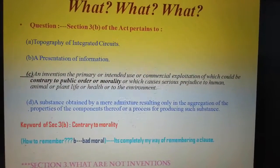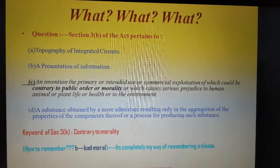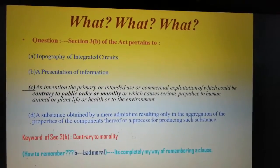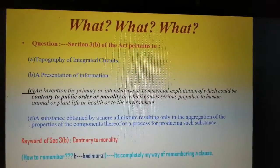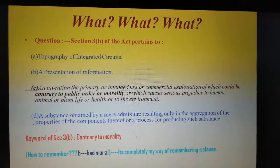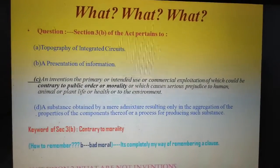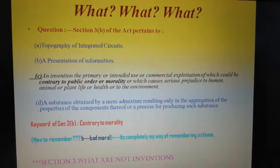This says an invention the primary or intended use or commercial exploitation of which could be contrary to public order or morality, or which causes serious prejudice to human, animal or plant life or health or to the environment. That means if an invention is made but that is